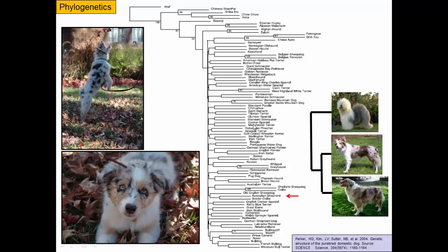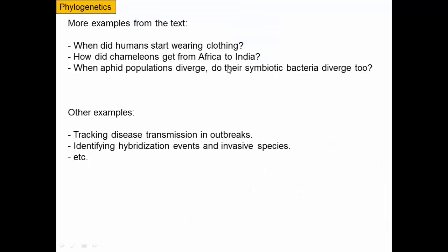So we can use phylogenies to answer all sorts of really interesting questions: where did this mystery dog breed come from, and what is it related to? Other applications include using phylogenetics to determine when humans started wearing clothing, how chameleons got from Africa to India, and whether aphid populations and their symbiotic bacteria diverge in parallel. We should think about phylogenetics as a tool we can use to answer all sorts of questions.